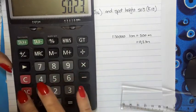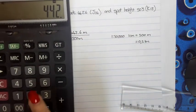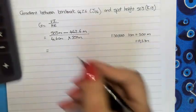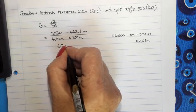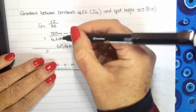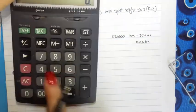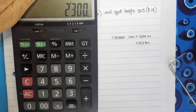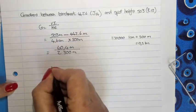So, 503 minus 442.6 and that gives me 60.4 meters. So, the vertical difference in height between the two is 60.4 meters. What is the horizontal equivalent? And the horizontal equivalent is 4.6 multiplied by 500 meters and that gives me 2,300 meters. So, 2,300 meters.